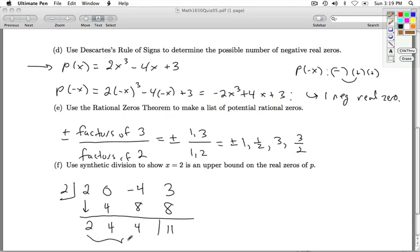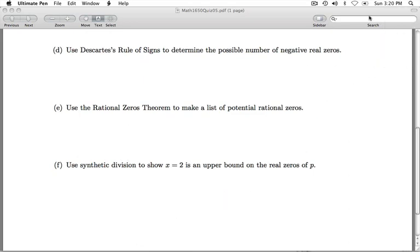So, how do I know this is an upper bound? Well, this is a positive number, and all these are positive numbers. So, x equals 2 is an upper bound. That's going to do it for quiz 5.